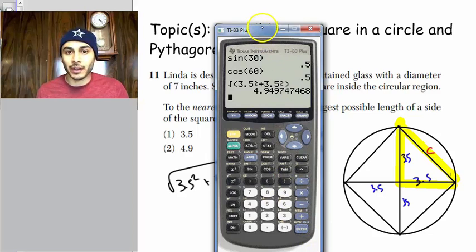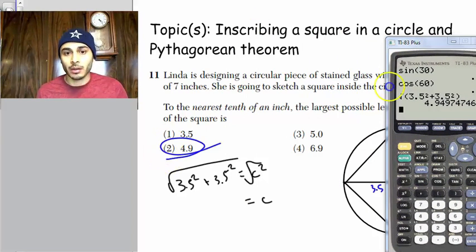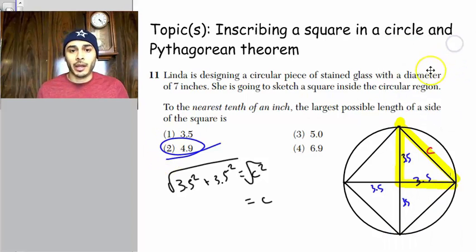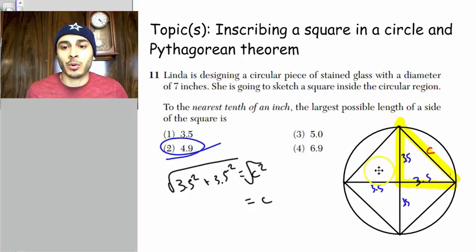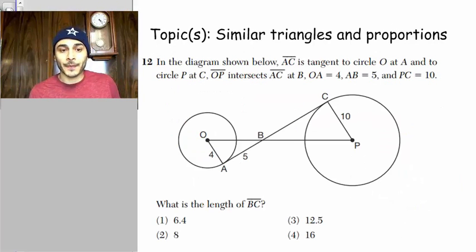It's approximately 5, or just 4.9, so we'll go with 4.9. And that's the largest possible length of the side of the square, because the largest possible square you can sketch in there would be an inscribed square.